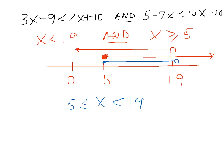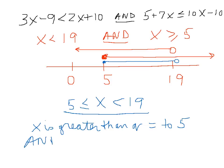So the way that this translates is x is greater than or equal to 5 and, big deal, less than 19.